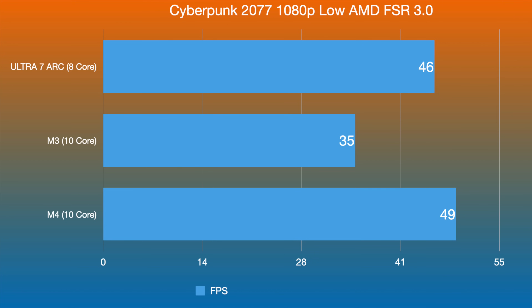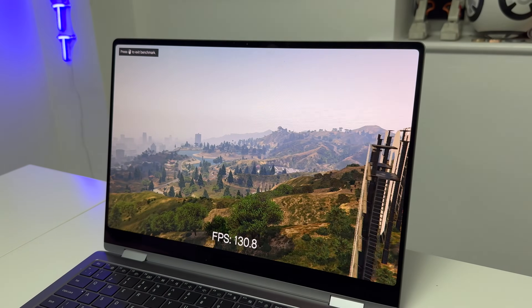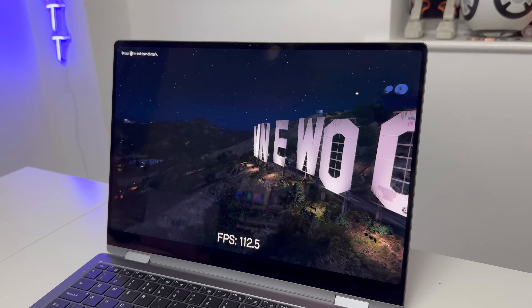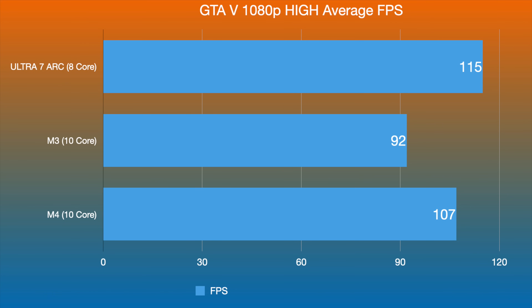Finally, I benchmarked GTA 5 via CrossOver. The Ultra 7 with its eight-core Arc GPU got 115 FPS, the M3 with its 10-core GPU got 92 FPS, and the M4 with its 10-core GPU got 107 FPS. It's interesting how close the M4 is to the Ultra 7, especially since the Apple machines are running GTA 5 through CrossOver rather than natively.